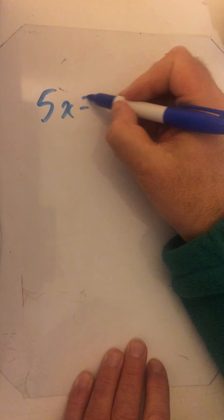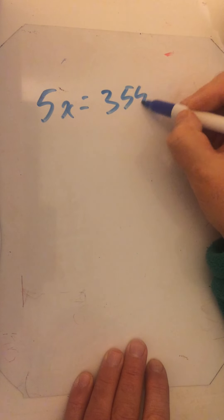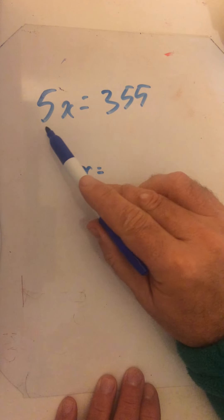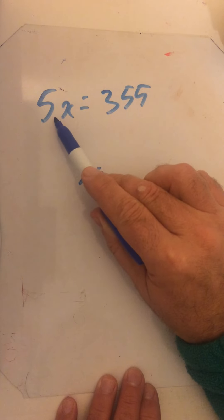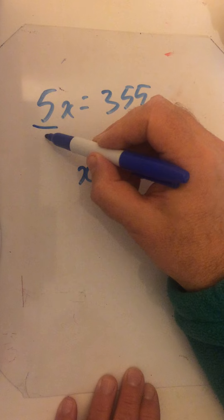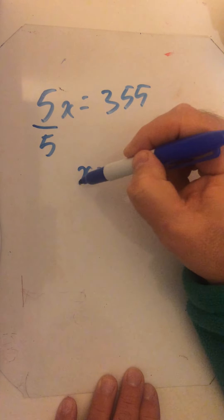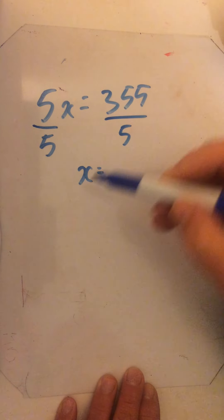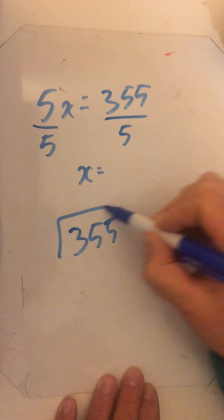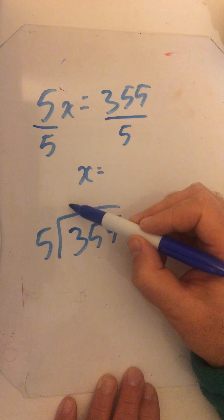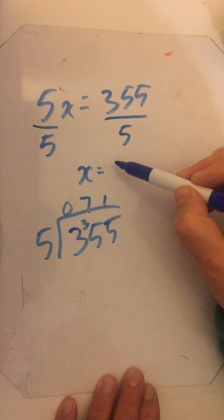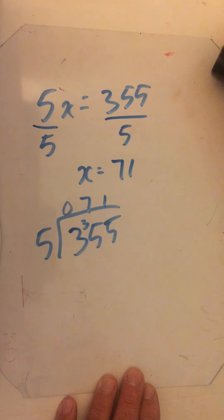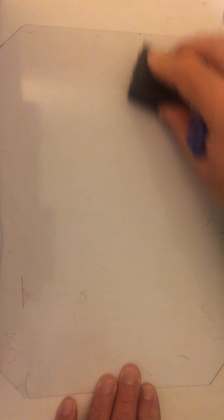The other type was something like 5x equals 355, and we have to find the value of x. I've got to get rid of this 5 times x — the invisible times sign — so I'm going to divide by 5. Balance method: do the same on the other side. 355 divided by 5 is 71. x equals 71.